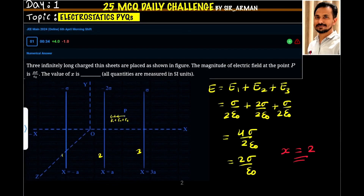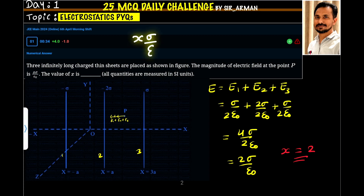Three infinitely long charge density sheets are placed as shown in the figure. The magnitude of electric field at point P is x sigma by epsilon naught. The value of x is to be determined.